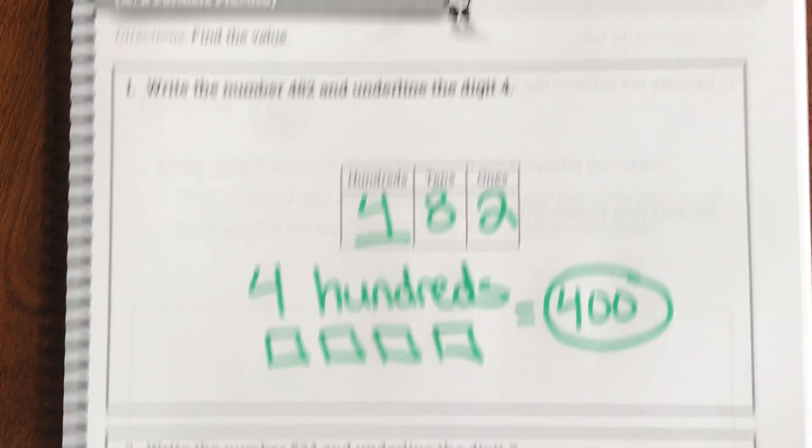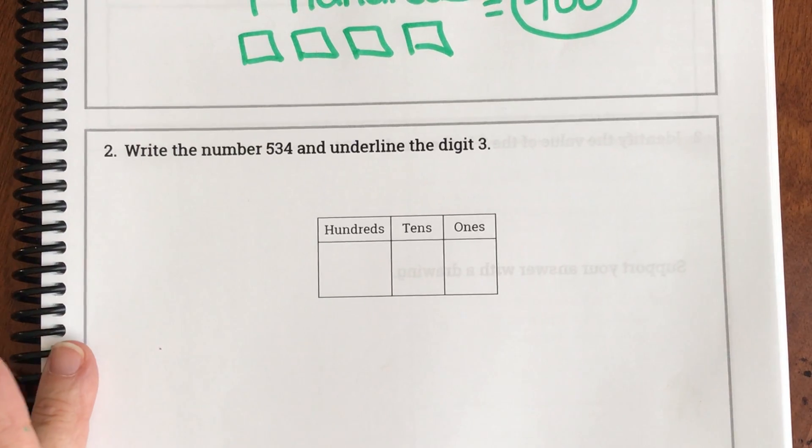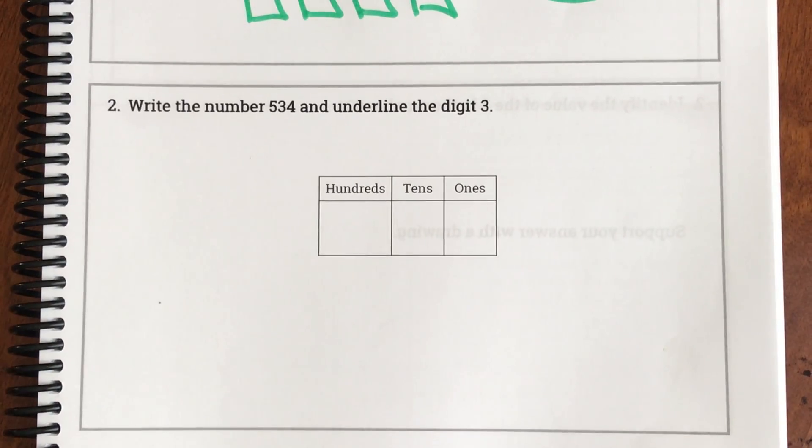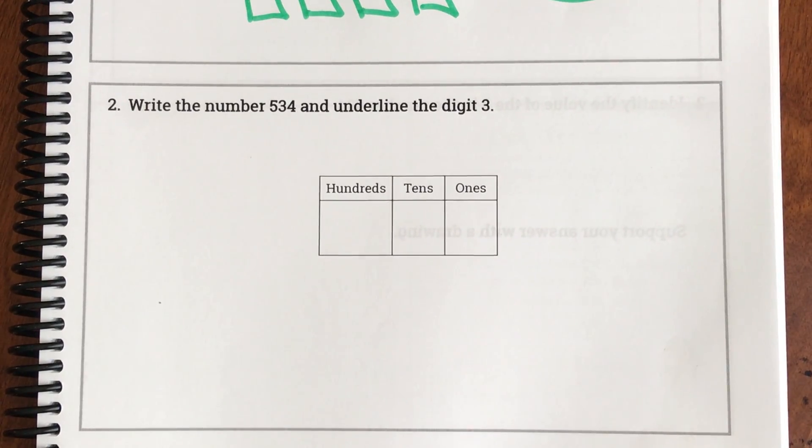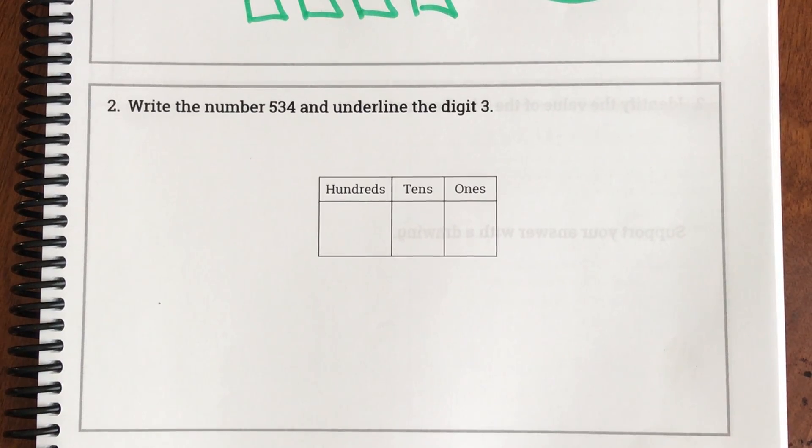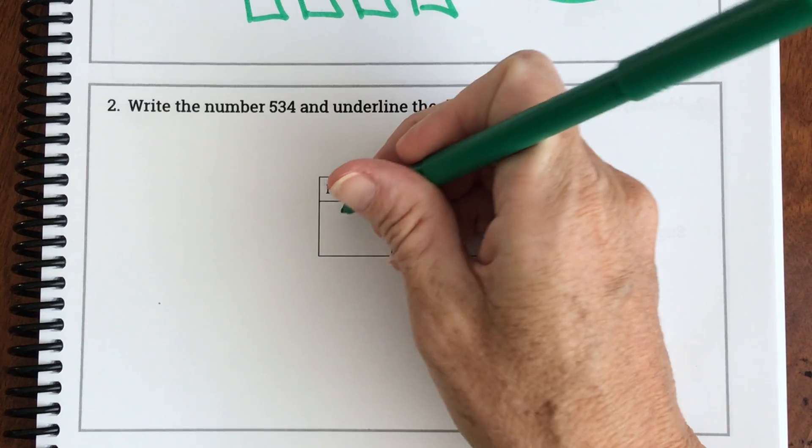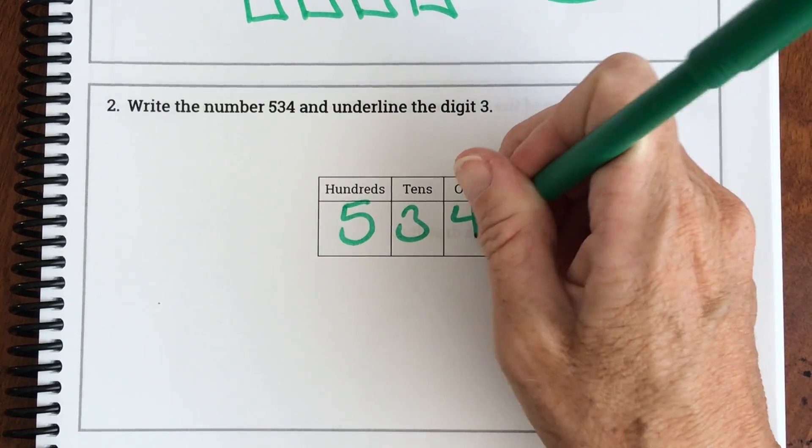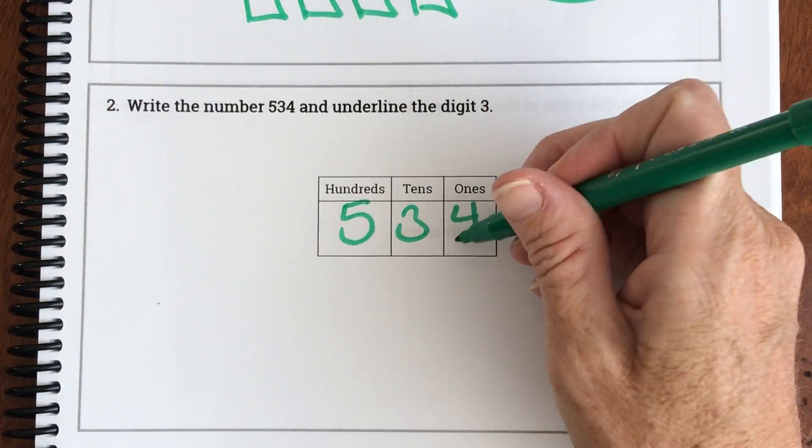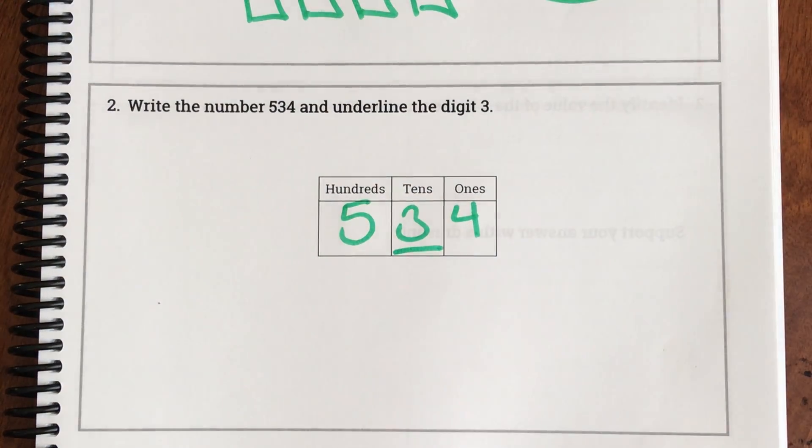Okay let's look at our last one together. Okay and it says write the number 534 and underline the digit 3. So again they made the place value chart for us. So we just have to put our number in. So 534. And they want us to underline the digit 3. Okay so what do we have? We have three tens.